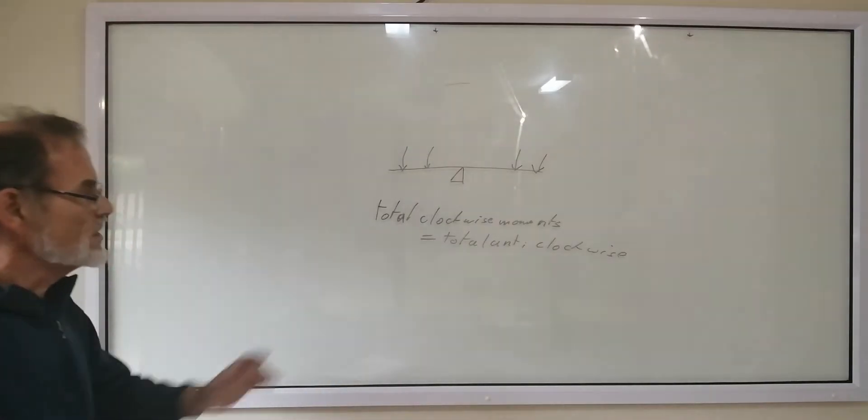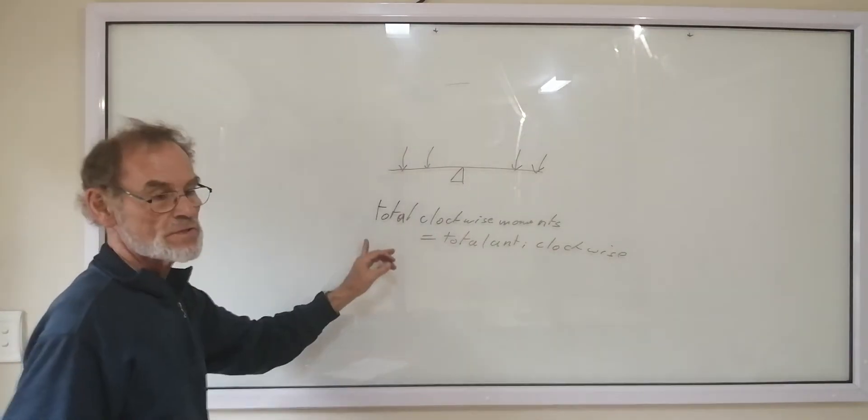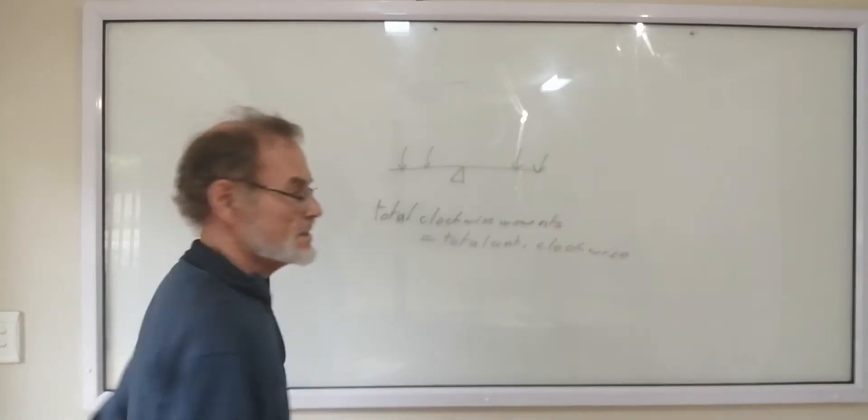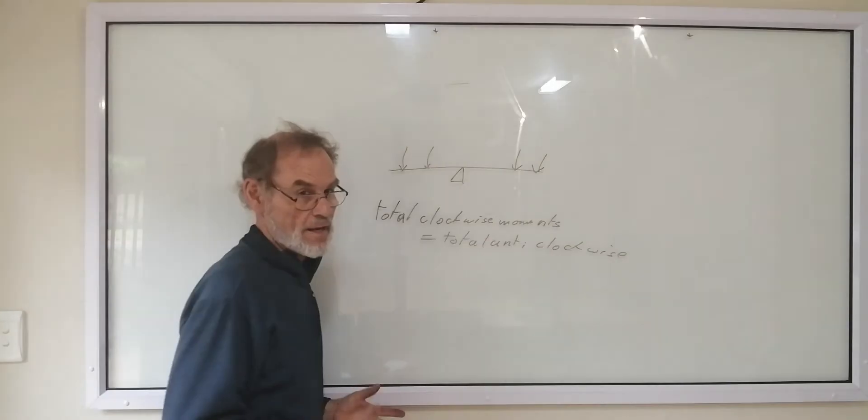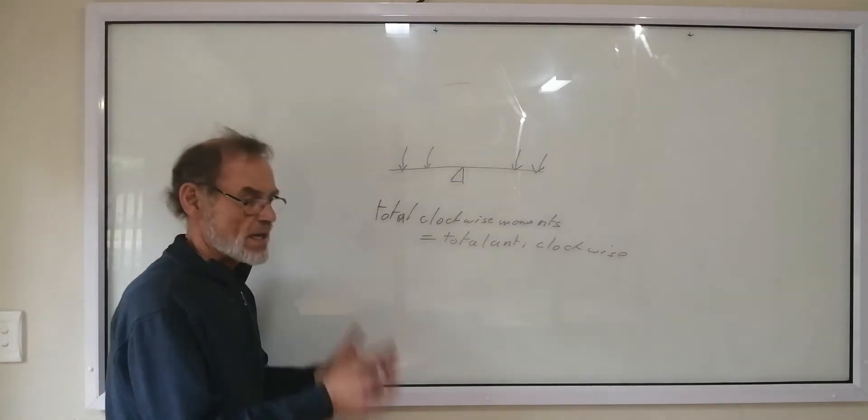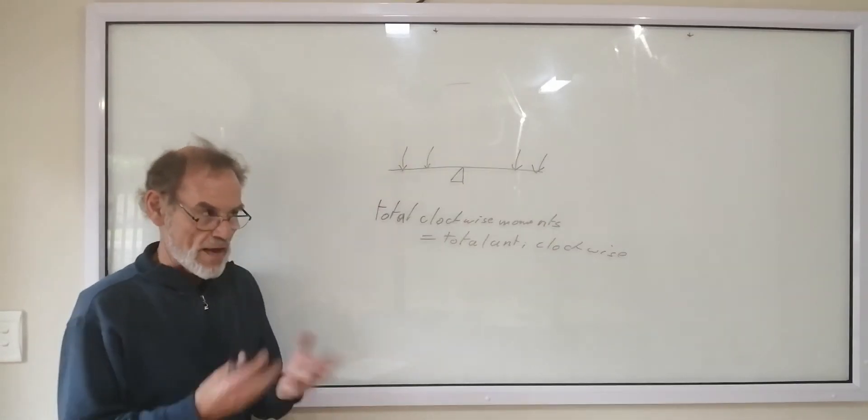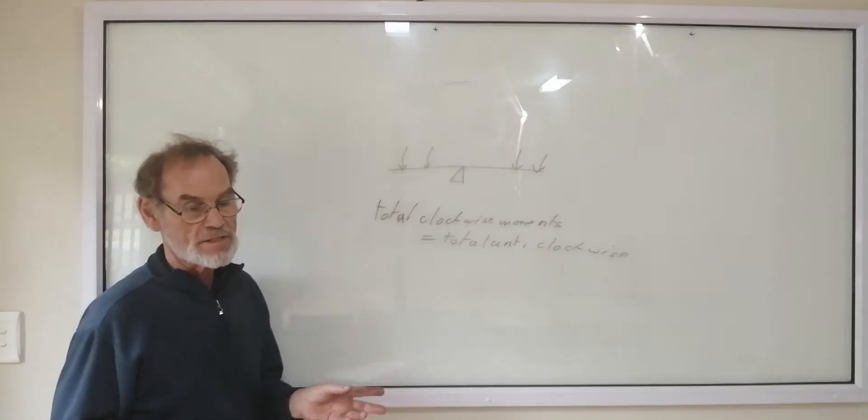And then we have an equation, and this equation we can use only if the system is balanced. So either they'll tell you it's balanced, or they'll say balance it. When you finish balancing it, it's balanced.